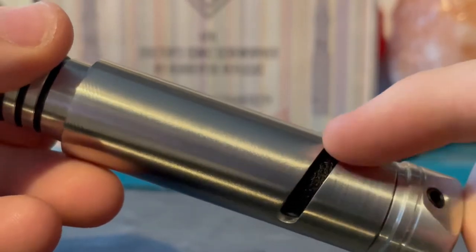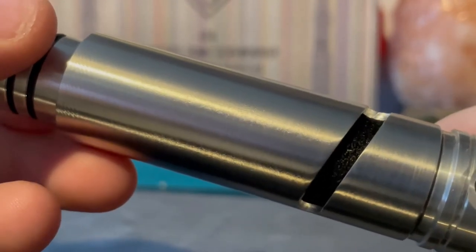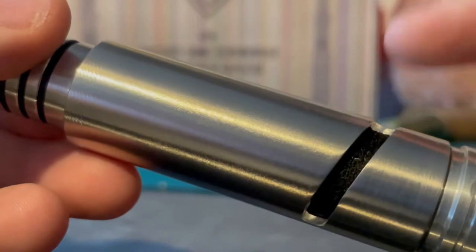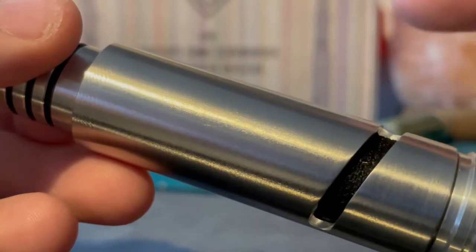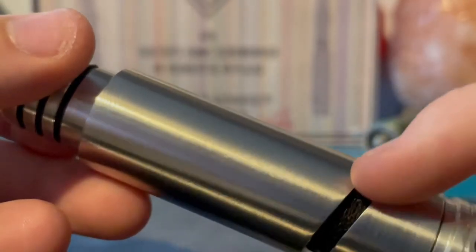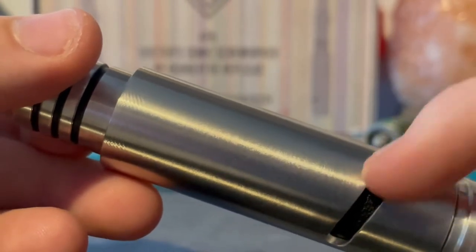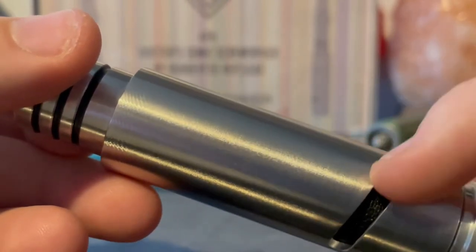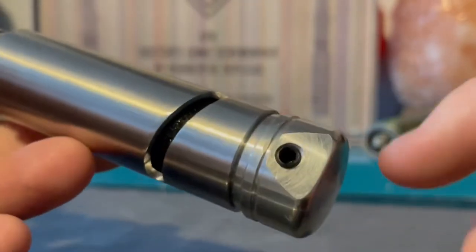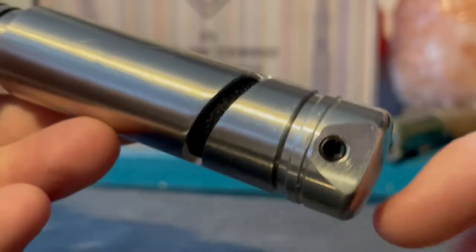And then we've got the body here, the handle or whatever you want to call it, with the mesh for the sound. Although I may take the batteries out and just have it so that the sound module is in there so that I can still have the mesh bit but not the sound, because I'm not really bothered about the sound to be honest.